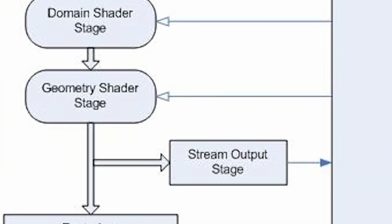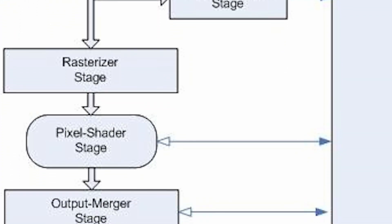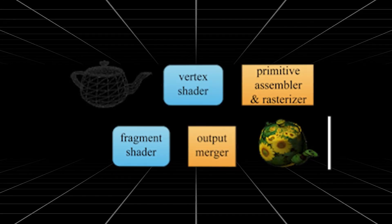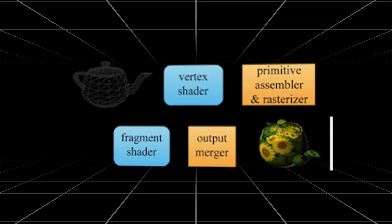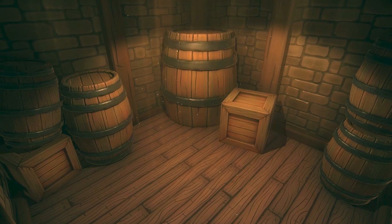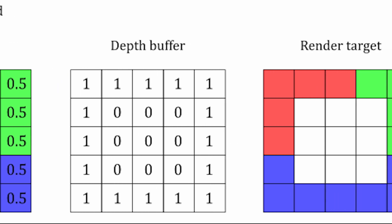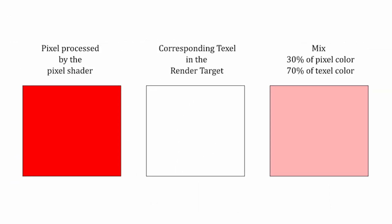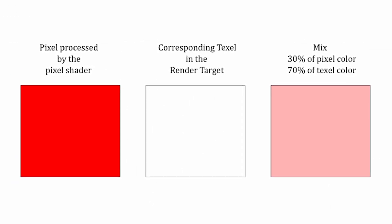The last step of the rendering pipeline is the output merger. It combines the output of the pixel shader, or fragment shader, with the specified render target using specified instructions. These instructions include blend state, which controls alpha blending, additive blending, and any other blending between the render target and the pixel shader output.